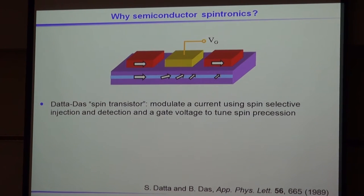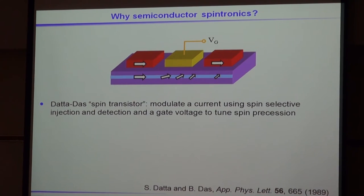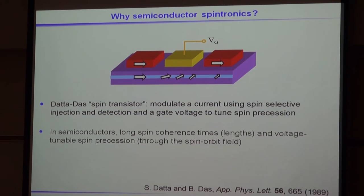Why are we interested in semiconductors? That work was done in metals. One thing you can do in semiconductors that you can't as easily do in metals is logic. In a prototypical proposed logic device, you have a spin-selective injector and a spin-selective detector. What's different from the GMR device is that you can have a gate, and with that gate you can change the spin precession in the channel so that you can make the electron spins be aligned or anti-aligned with your detector. This is an analog to an electro-optic modulator. You can have long spin coherence times in semiconductors and voltage-tunable spin precession through spin-orbit effects.